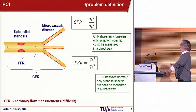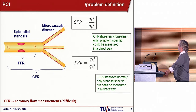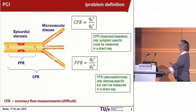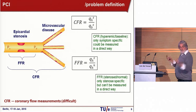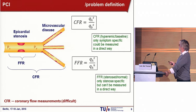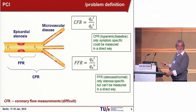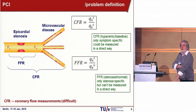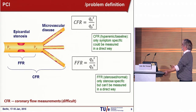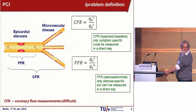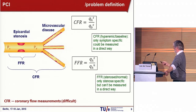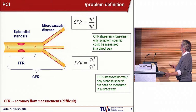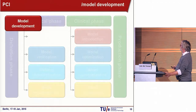Another parameter is called fractional flow reserve, which is the flow in the hyperemic state in the stenosis case divided by the virtual situation — the flow in the hyperemic state if there were no stenosis. Of course you cannot measure it because the stenosis is there; the only way to measure that is to revascularize and then measure it, but you want to know beforehand. So this is a nice parameter — it tells something about the stenosis, but it's not measurable, at least not directly. And there a model can be helpful.